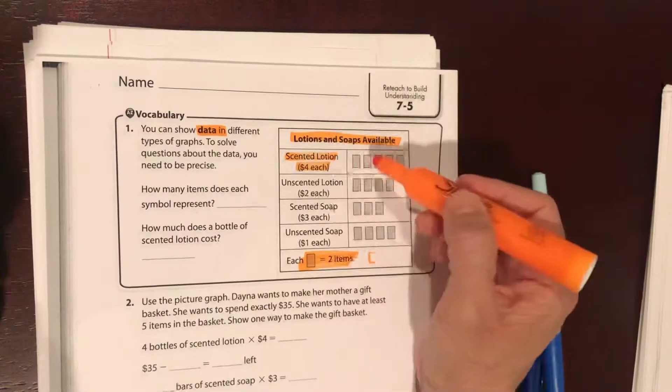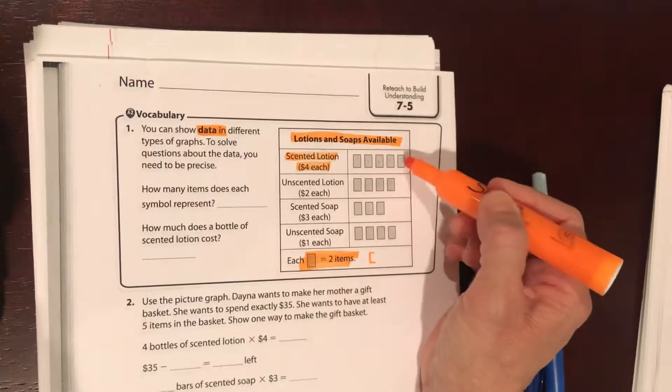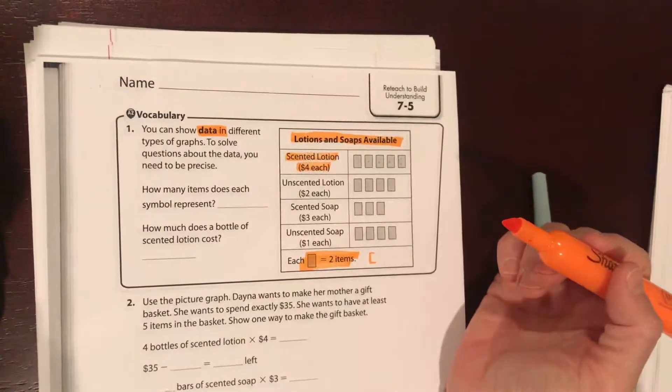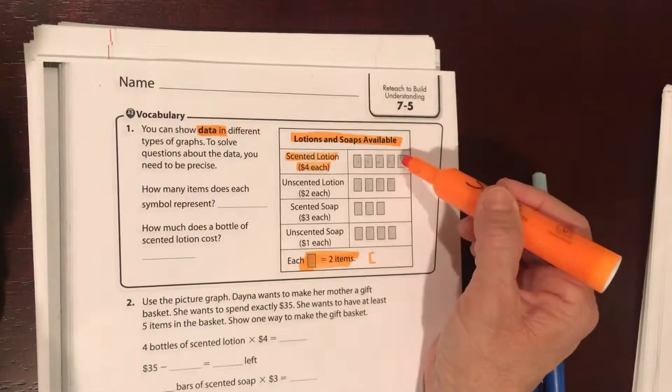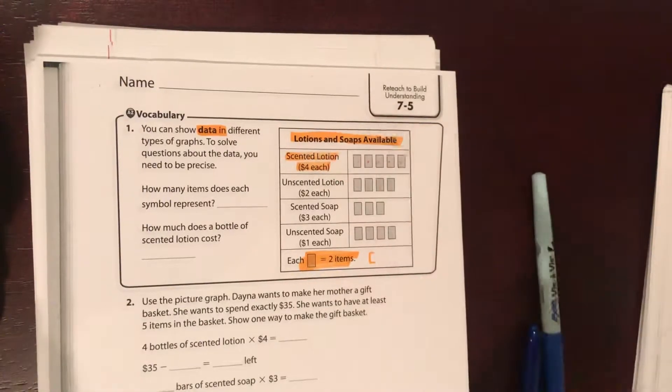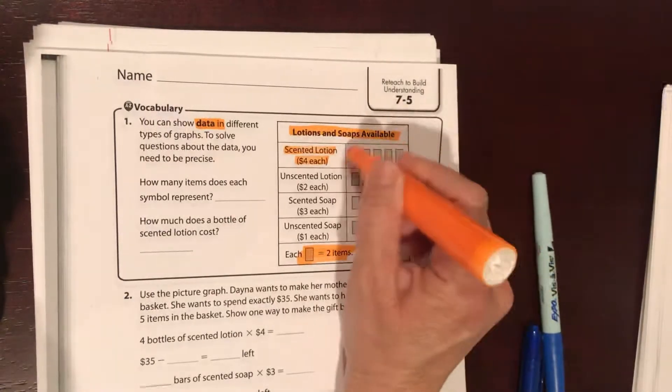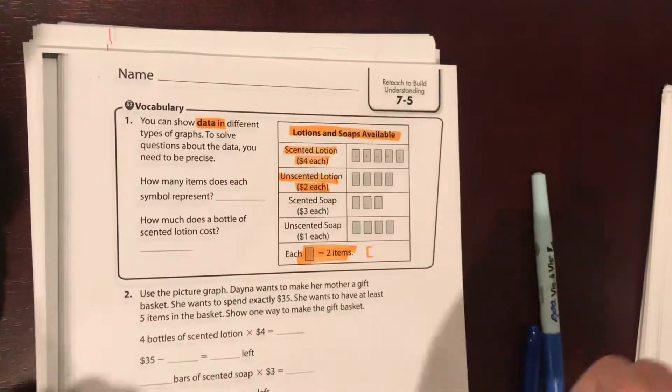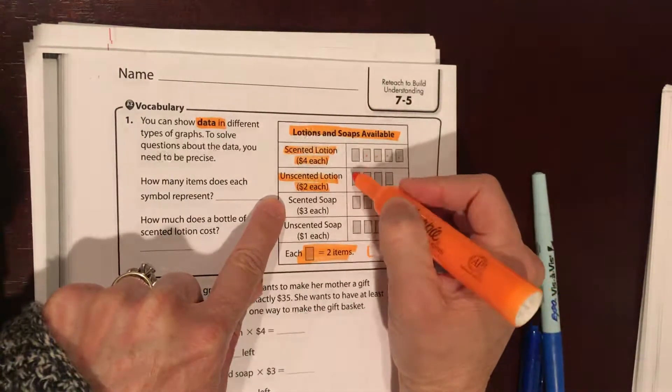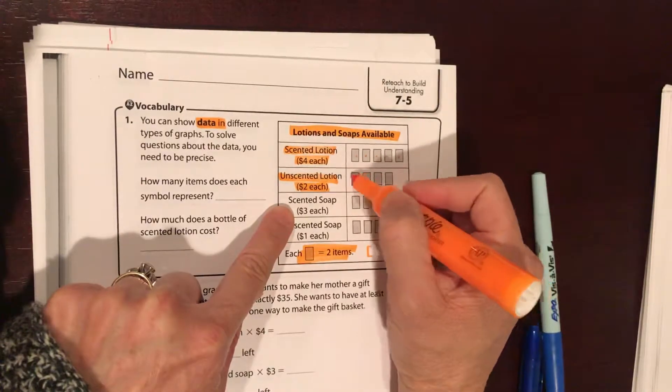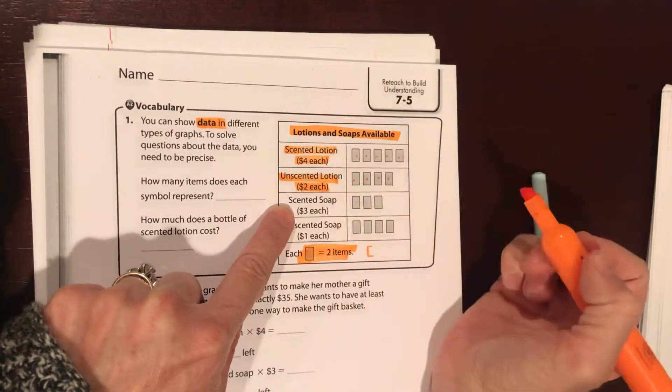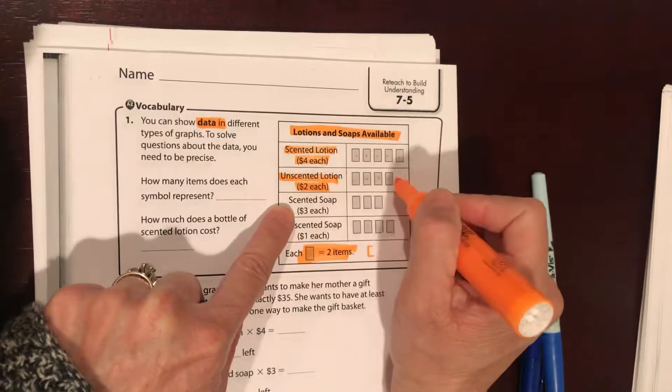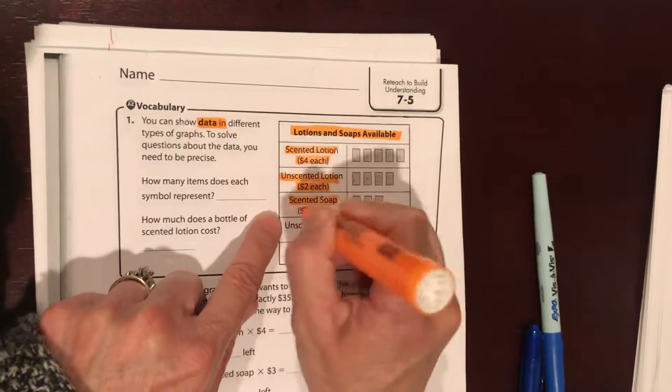We have scented lotions and they're four dollars each, but each item represents two items, two lotions. So this would be two, four, six, eight, ten scented lotions that are available times four dollars each. That would be forty dollars if we wanted to buy all of these. Unscented lotion, makes sense that they're a little bit less expensive because they don't have the cool scents in them. Each one represents two lotions, so there's two, four, six, eight lotions available at two dollars each. So if we bought all eight that would be sixteen dollars.